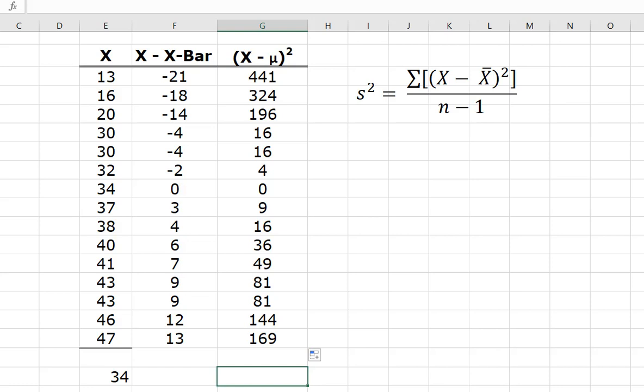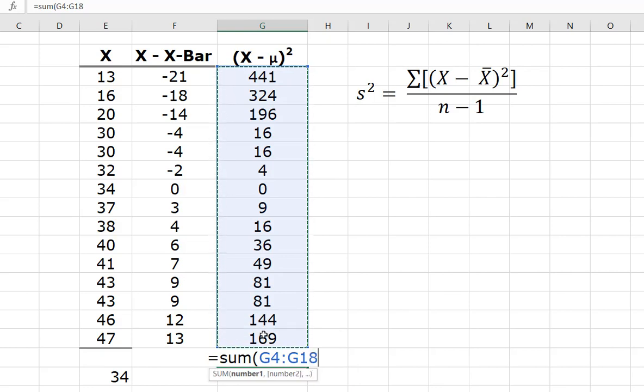So, now what I know is I've done my x minus x bar, check. Squared, check. Now, I'm going to use my large operator that says sum all. And I'm going to add all of those values together to come up with the top of my formula. So, I'm simply going to come here and I'm going to say equals sum. And that simply tells Excel, hey, guys, I want you to sum everything in G4 to G18. I'm going to hit enter. And now I know that the sum of the squared distances from the mean is 1582.